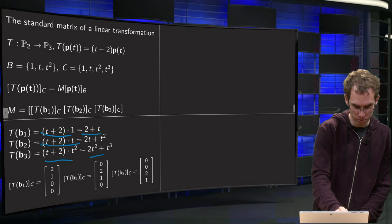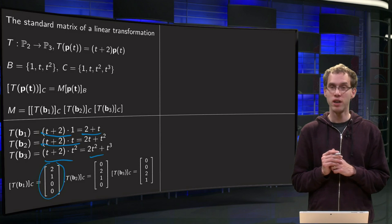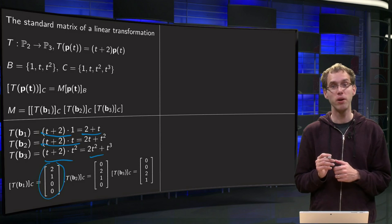So our [T(b₁)]_C will be the vector (2, 1, 0, 0). And similarly for the other ones we get those vectors (0, 2, 1, 0) and (0, 0, 2, 1).